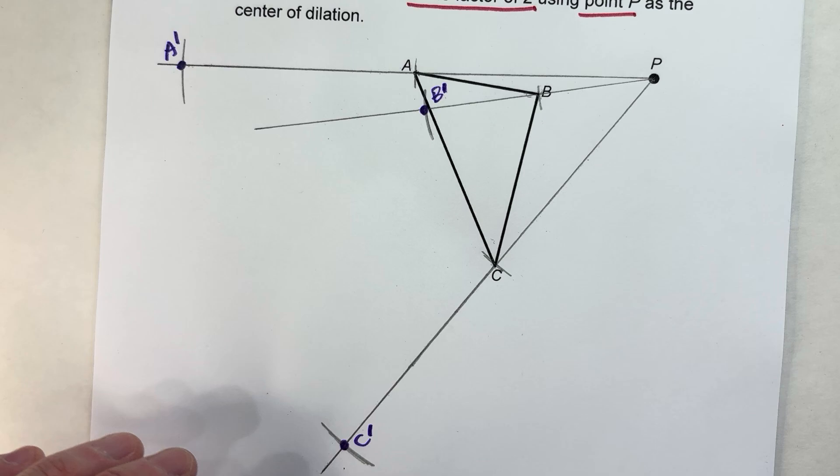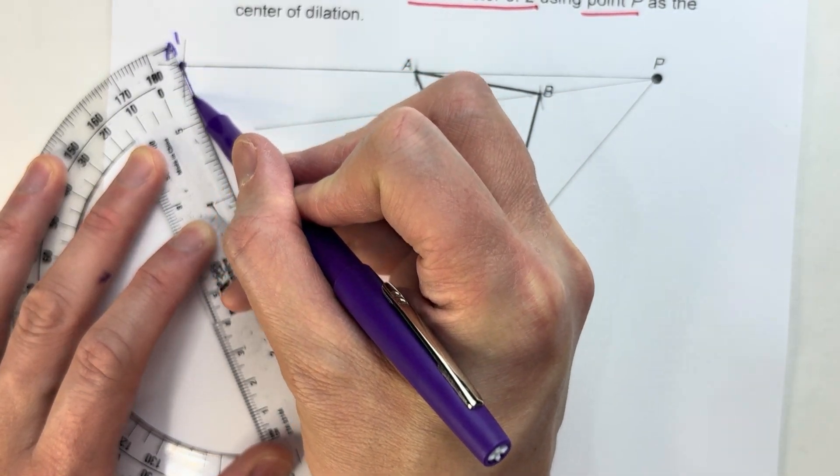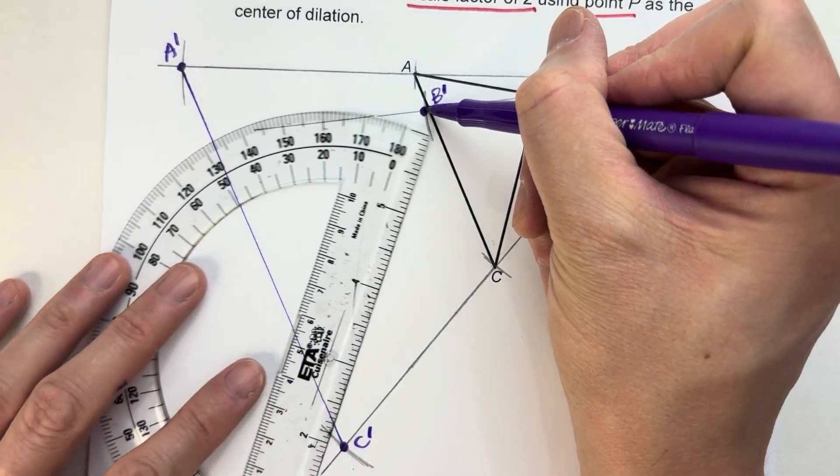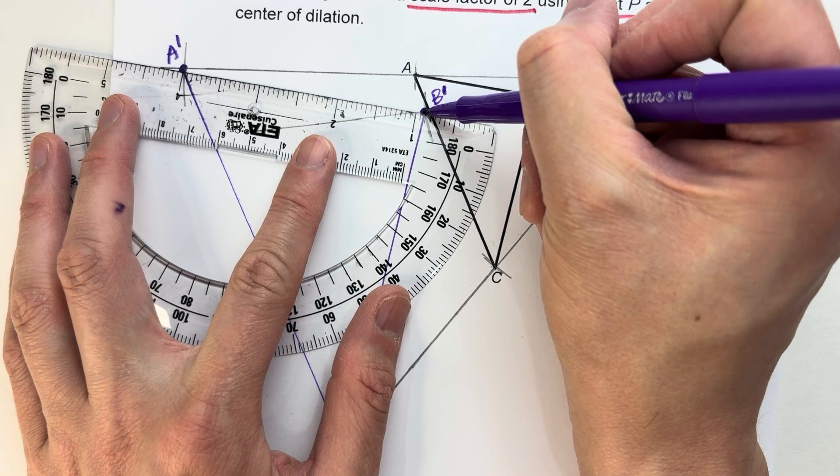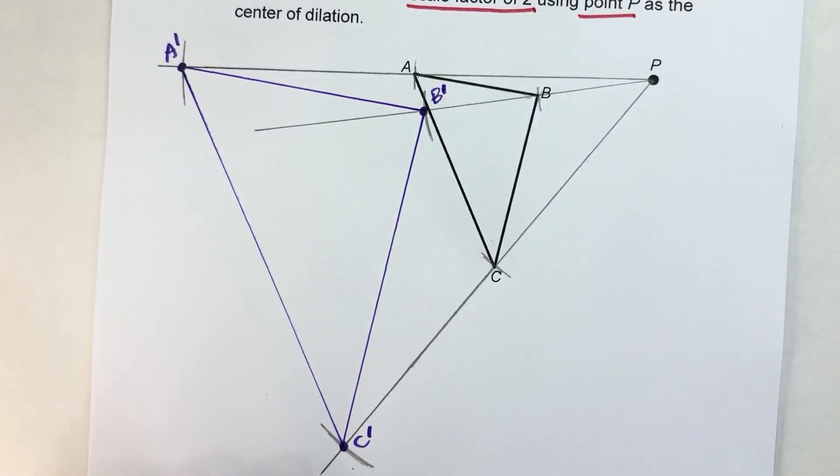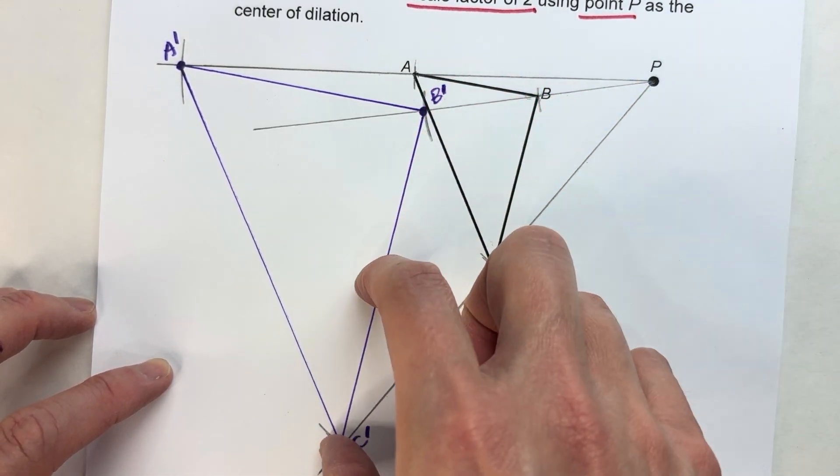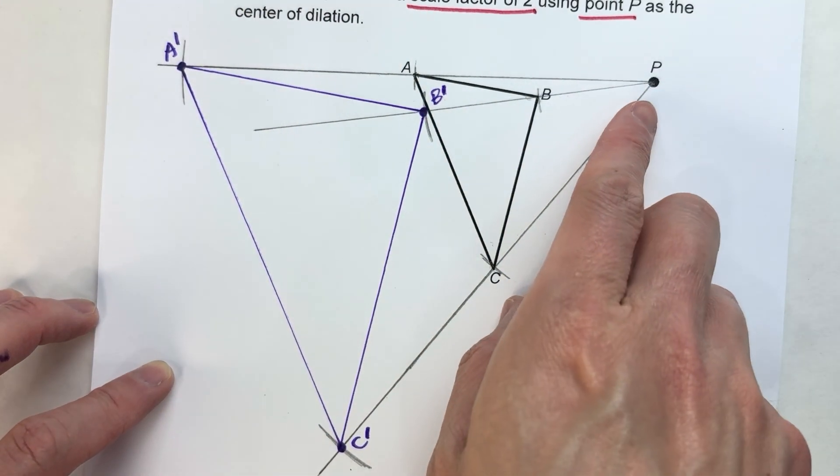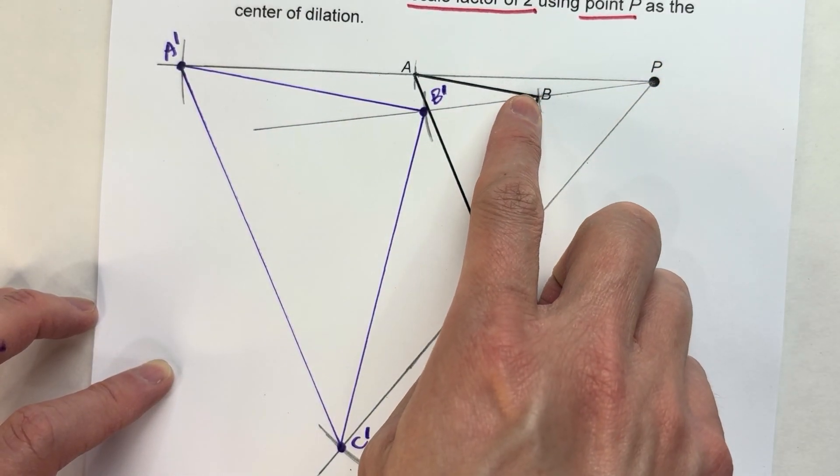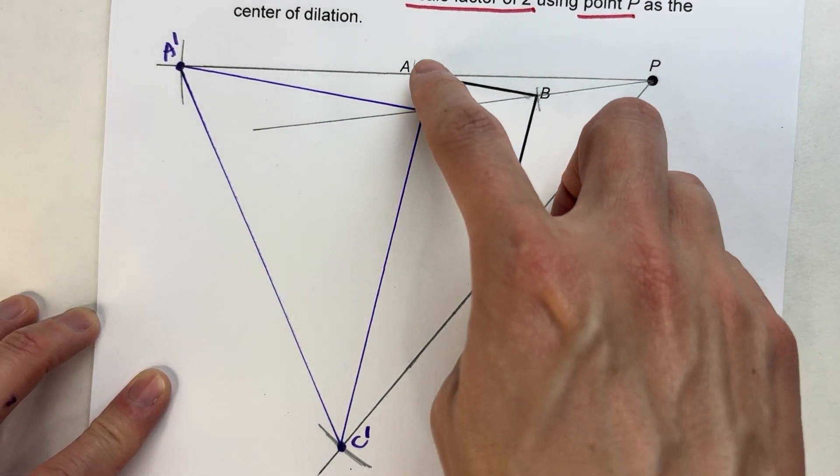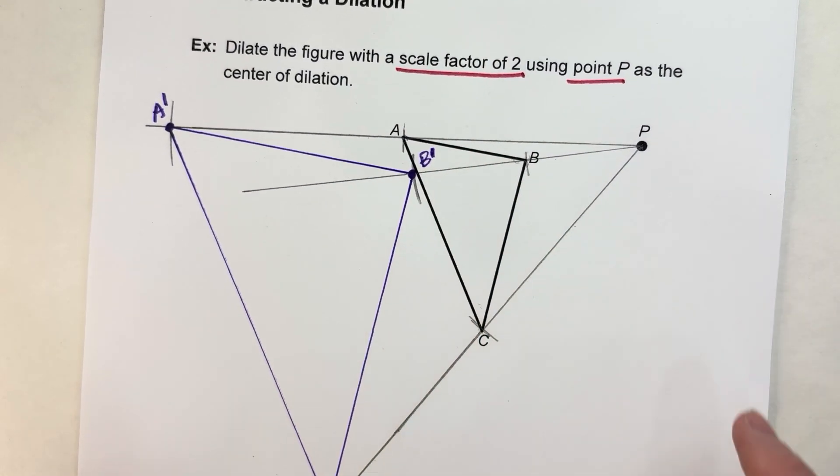And if I want to know what my dilated shape ends up looking like, I just connect up those points. So let's do that. Here's A to C, here's B to C, and then here's A and B. And there it is. And notice the shape ends up where each side is twice the length of the original, and it's a little bit further away from P than the original was. In fact, it's twice as far away. And it still has the same general shape, it's just bigger because we use a scale factor of two.